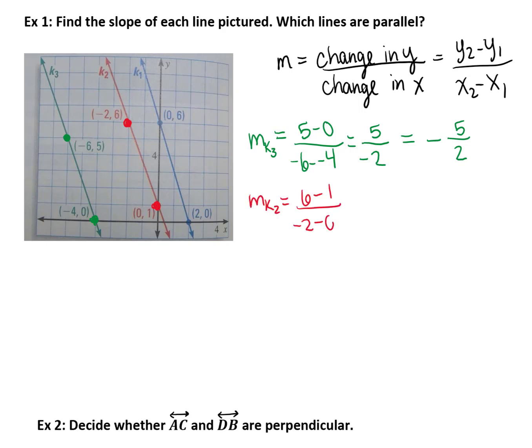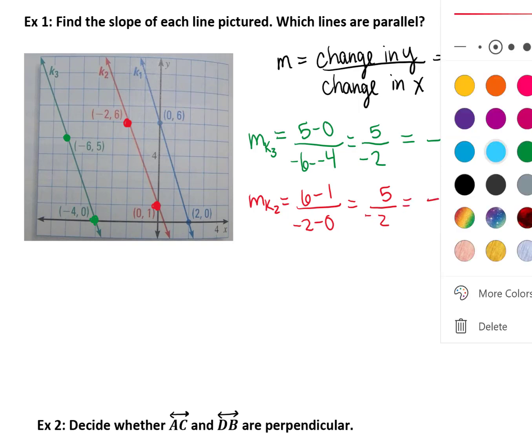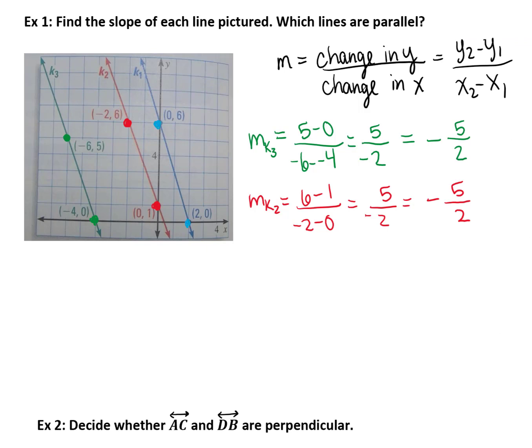So let's do the same thing to calculate the slope for the red and the blue line, k2 and k1, and just compare the slopes. Notice that the slope of k3 and k2 were both negative 5 halves, which means those two lines are indeed parallel. However, the blue line had a slope of negative 3, so that blue line is not parallel with the green and red line. So we would just conclude that k2 is parallel to k3.